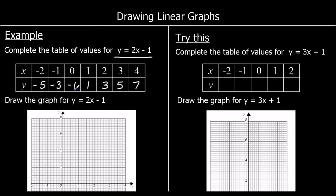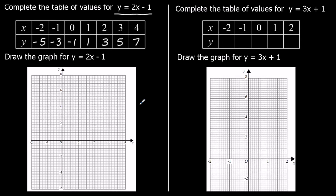And you should be able to see a pattern here. We've got the same gap between each of our y values — it's going up by 2 every time. So that's going to make it a straight line, the same gap every time. So now we can plot these onto our graph. These are our coordinates: x is 4, y is 7 — that's coordinates 4, 7. Then 3, 5. x is 3, y is 5. And so on, so we can plot these coordinates on the graph.